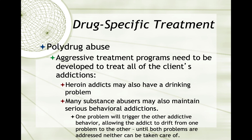Polydrug abuse: aggressive treatment programs need to be developed to treat all of the client's addictions. Heroin addicts may also have a drinking problem. Many substance abusers may also maintain serious behavioral addictions. One problem will trigger the other addictive behavior, allowing the addict to bounce from one problem to the other. Until both problems are addressed, neither can be taken care of. So if somebody uses depression as a way to rationalize their alcoholism, you need to deal with both, but you need to cure their alcoholism first before you deal with their depression — otherwise they're just going to flip-flop between the two.